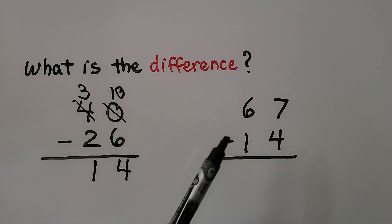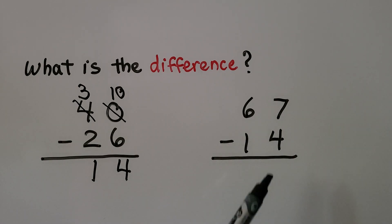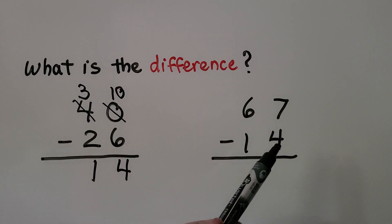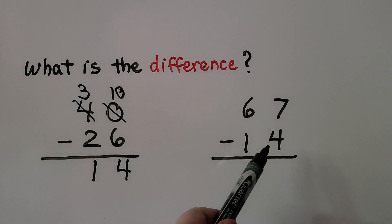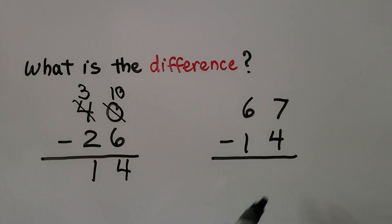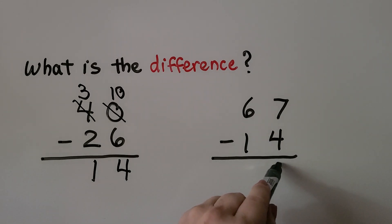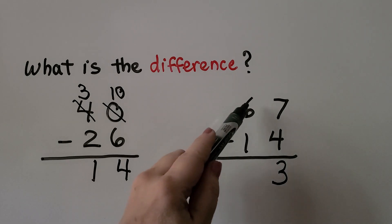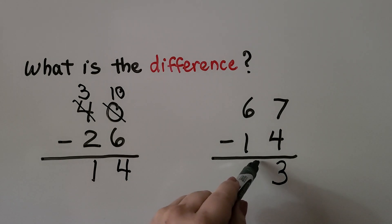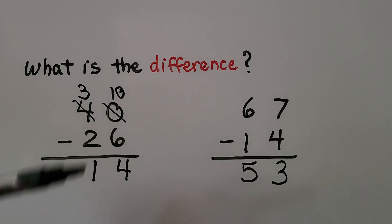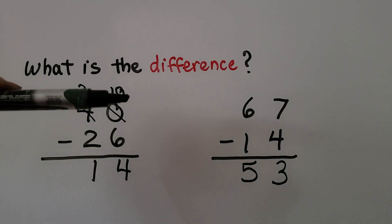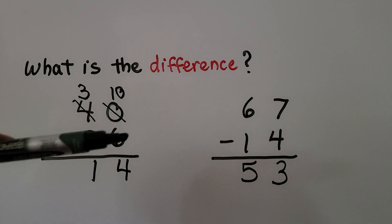Here we have 67 minus 14. We look at the ones place: we have 7 ones and we need to take away 4 ones. We don't need to regroup — we can take 4 ones from 7 ones, which leaves 3. We have 6 tens minus 1 ten — that's 5 tens. The difference is 53. We're finding the difference between the minuend and the subtrahend.